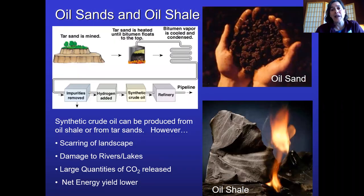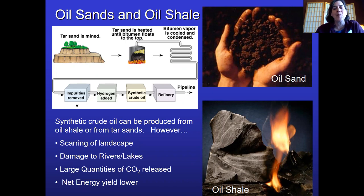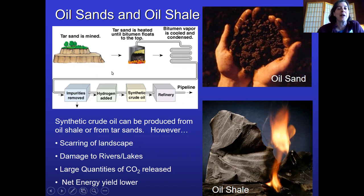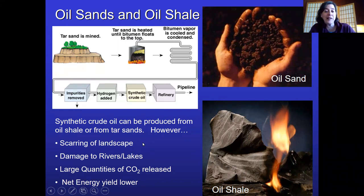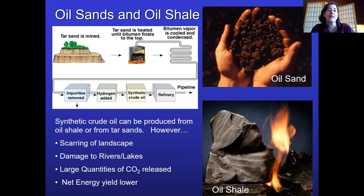Oil sands, otherwise known as tar sands, are a source of much of our oil from Canada. Rather than a well gushing liquid oil, you have sand saturated with oil, and through a long process you can extract that oil. The problem is you basically have to tear apart the landscape to get it, ruining local rivers and lakes. There's a huge amount of CO2 both in processing and burning the oil, and because it's very energy intensive compared to a liquid oil well, the net energy yield is low.